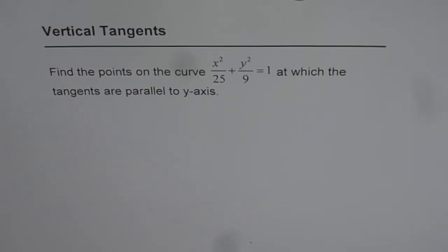Vertical tangents. Find the points on the curve x squared over 25 plus y squared over 9 equals 1 at which tangents are parallel to y axis.